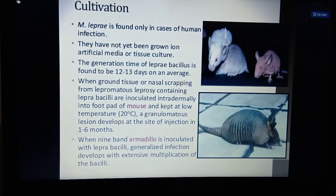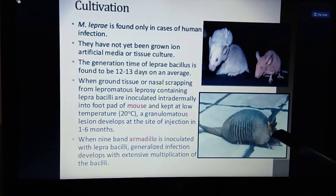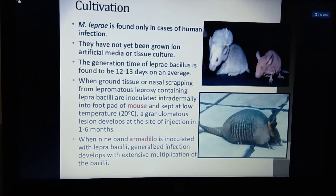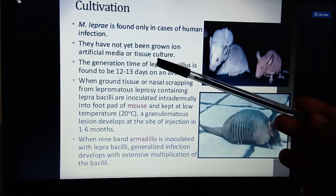Cultivation of Mycobacterium leprae is done in two ways: in rats and in armadillos. Armadillos are mostly found in African areas and can be inoculated with leprosy bacilli. In cultivation, tissue culture is performed — bacteria are collected, provided with nutritional growth media, and injected either into rats or armadillos. Artificial media and tissue culture are used for growth in rats.